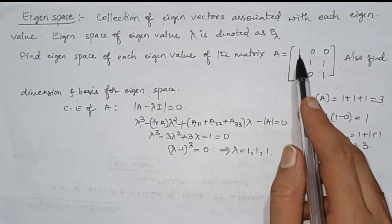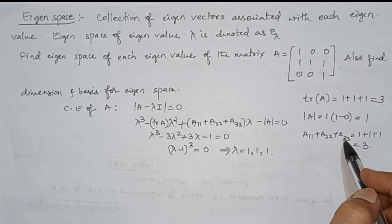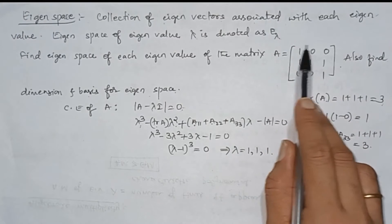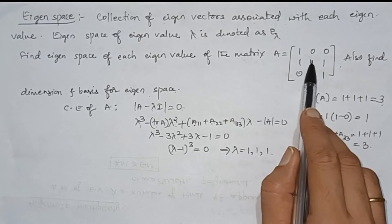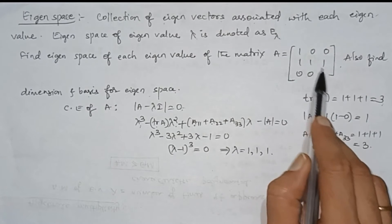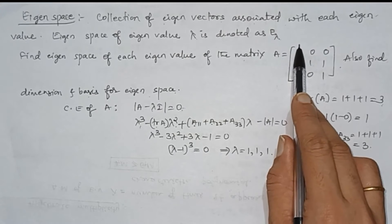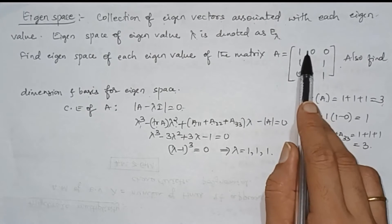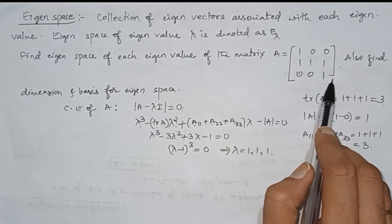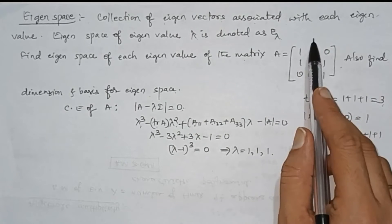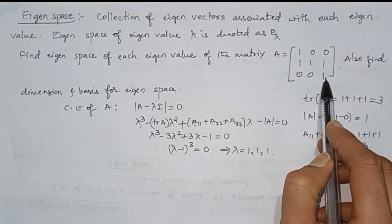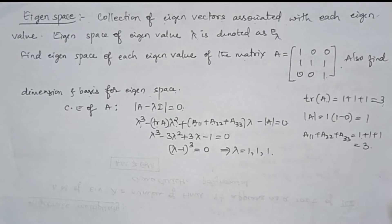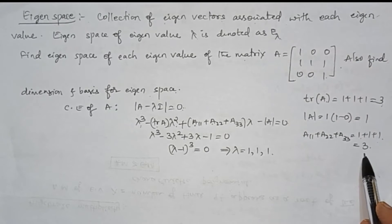Now we find A11 plus A22 plus A33, that is the cofactors of the diagonal entries. Delete the first row and first column — the minor is 1 minus 0, which is 1. For diagonal elements, the sign is positive, so the cofactor is also 1. Similarly, deleting the second row and second column gives a determinant of 1. Deleting the third row and third column also gives a value of 1. Adding all these gives 3.